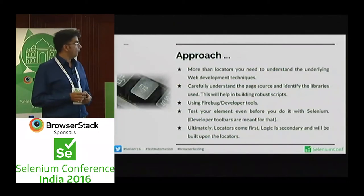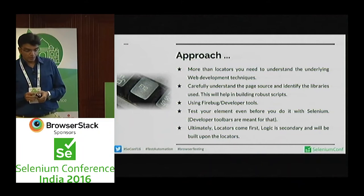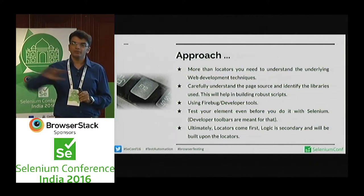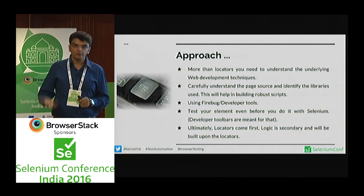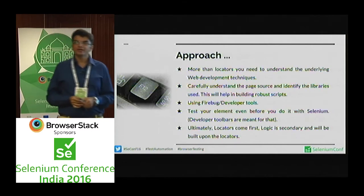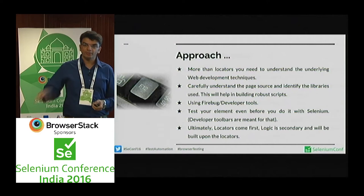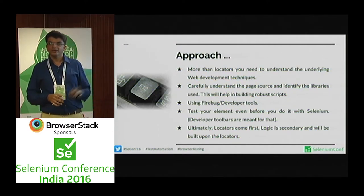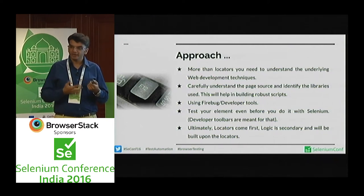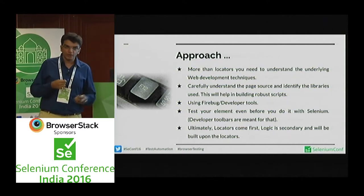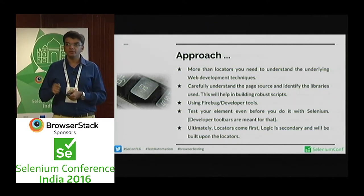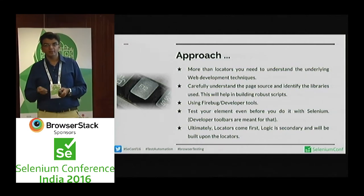Let's get into the basics of object identification interactively. What do you do when you start automation, apart from the tooling aspects? You understand the HTML and web technologies. Before even doing object identification, you try to analyze the page source and understand the underlying HTML technologies being used. This is often neglected by automation developers in the beginning, but they eventually learn it the hard way.